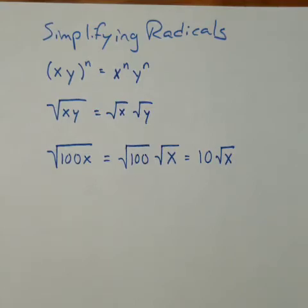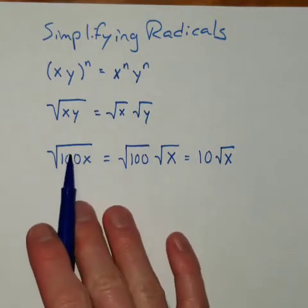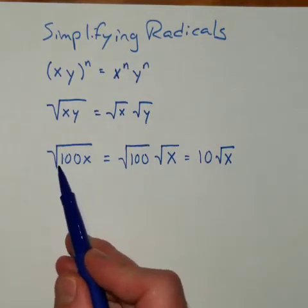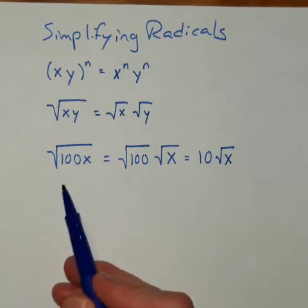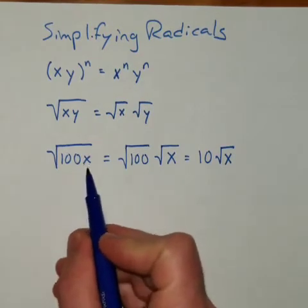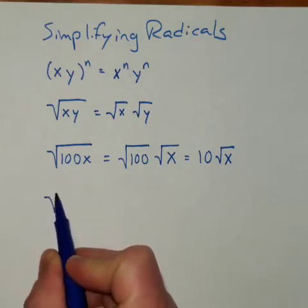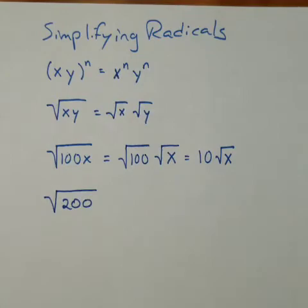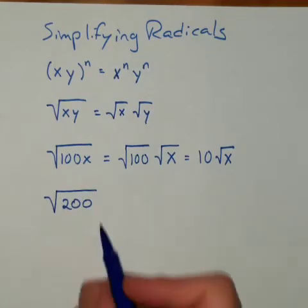All right, so the main idea here is you can simplify a root as long as there is a perfect square factor. But what happens if I don't have a variable, if this was something like the square root of 200? Well, 200 has a perfect square factor. It's 100.